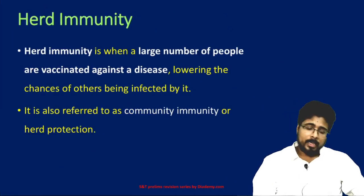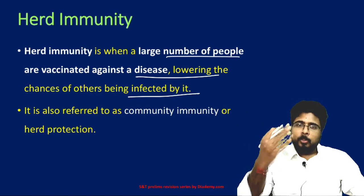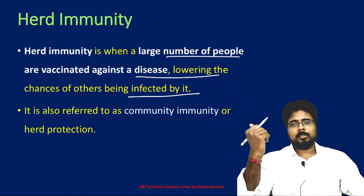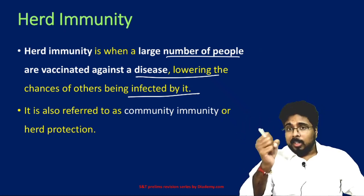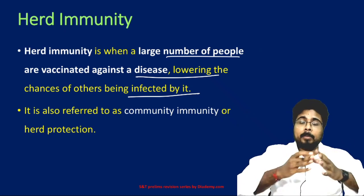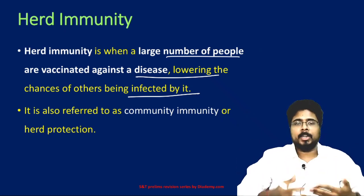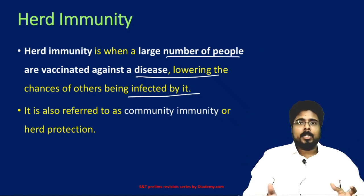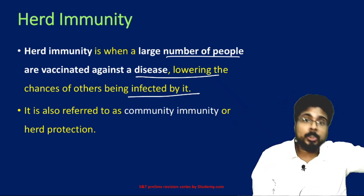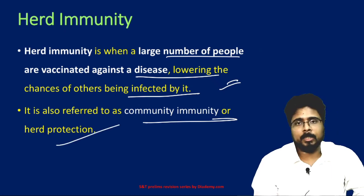Herd immunity is when a large number of people are vaccinated or immune against a disease, lowering the chances of others being infected. For example, if out of 100 people, 50–60 got infected and developed antibodies, the disease cannot easily spread to the remaining 40 because so many already have immunity. When a large portion of the population develops immunity, the disease cannot spread among the population. Herd immunity is also referred to as community immunity or herd protection.